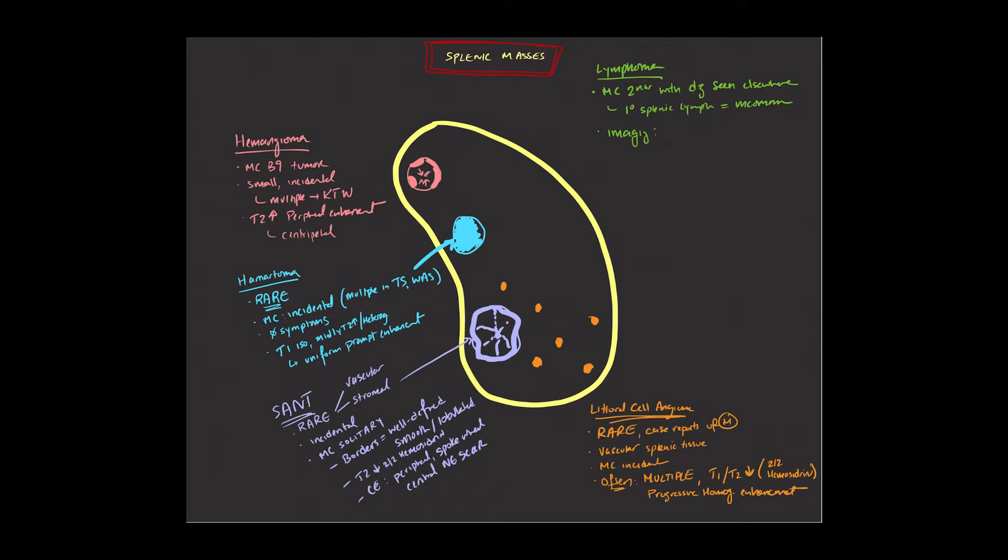And on imaging, this can really have a variety of appearances. Generally, the masses that you end up seeing will be hypodense or hypointense. They'll have low-level enhancement. These aren't going to be masses that have very brisk enhancement when you give contrast.